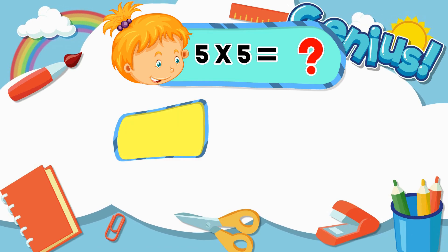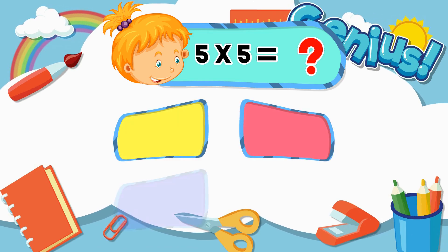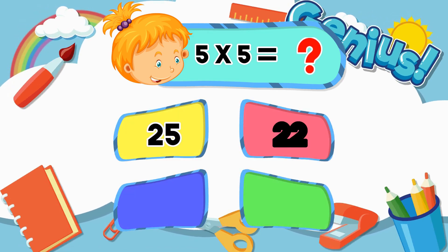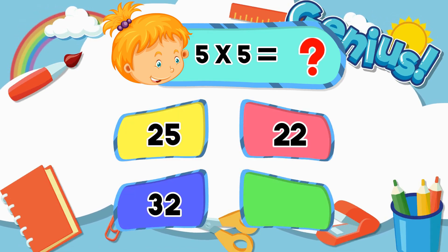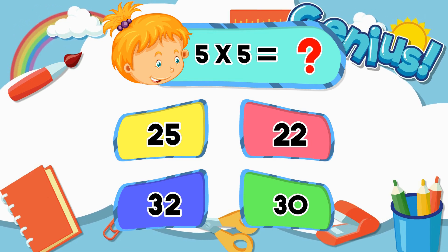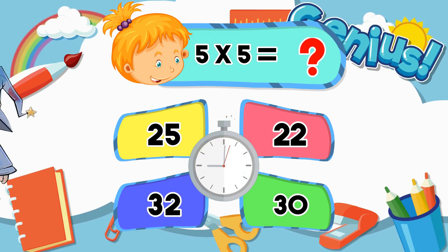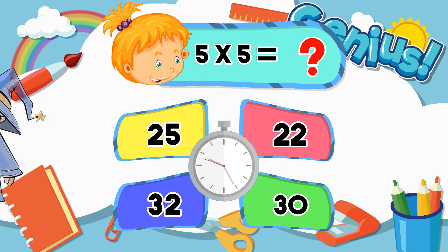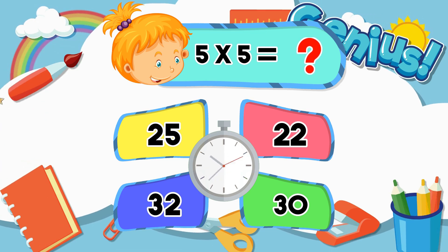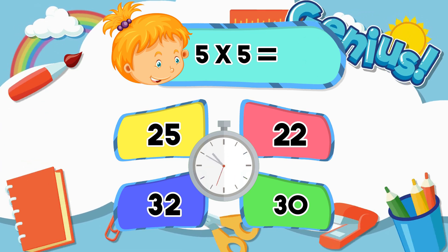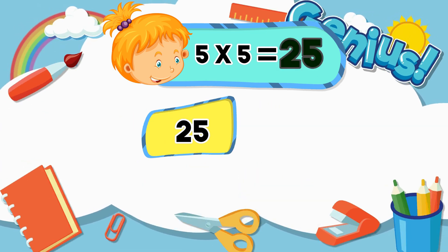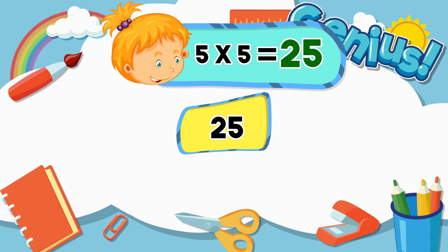What is five times five? Options: Twenty, Twenty-two, Thirty-two, Thirty. Answer: Twenty-five.